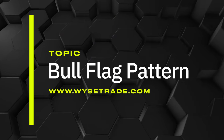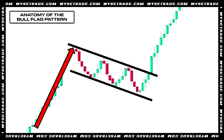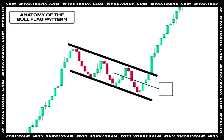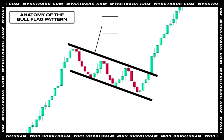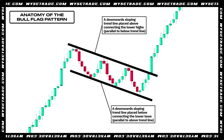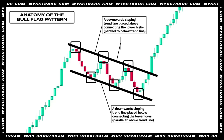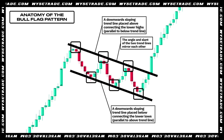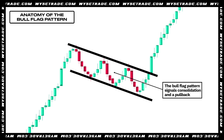Starting with the bull flag pattern — here is the anatomy. You have your flag pull, which is the moving uptrend. You then have your bull flag pattern, which is a descending channel. The bull flag pattern has two parallel downward sloping trend lines placed above and below connecting the lower highs and lower lows. The angle and slant of the two trend lines mirror each other. The bull flag pattern signals consolidation and a pullback.